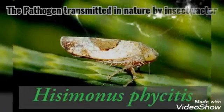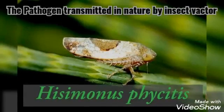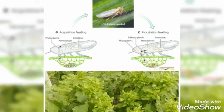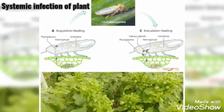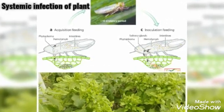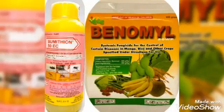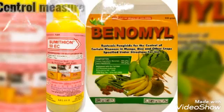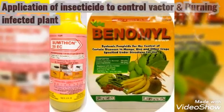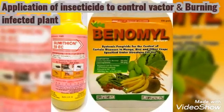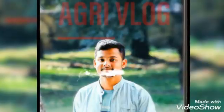The pathogen is transmitted through its insect vector. The systemic infection of the plant occurs through this insect vector. Control measures: application of insecticide and burning of infected plants.